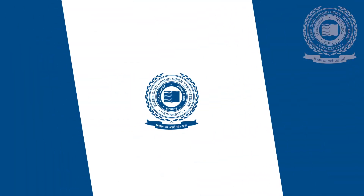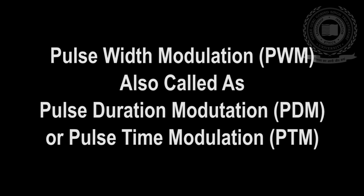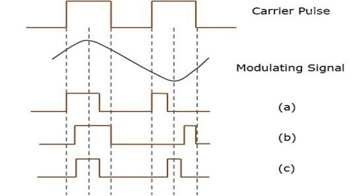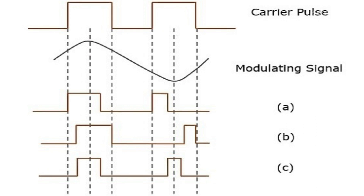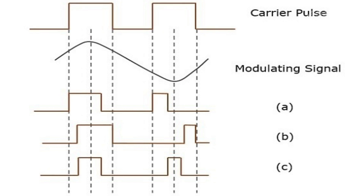Now let us discuss pulse width modulation technique. Pulse width modulation, also called pulse duration modulation or pulse time modulation, is a technique in which the width, duration, or time of the pulse carrier varies, which is proportional to the instantaneous amplitude of the message signal. The amplitude of the signal remains constant. Amplitude limiters are used to make the amplitude constant. These circuits clip off the amplitude to a desired level and hence the noise is limited.